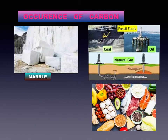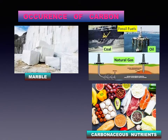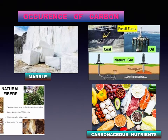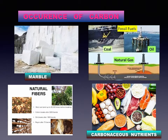Third, carbonaceous nutrients like carbohydrates, proteins, and fats, and fourth, natural fibers such as cotton, wool, and silk.